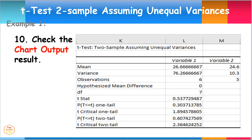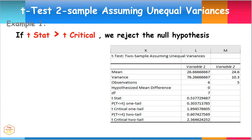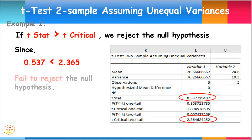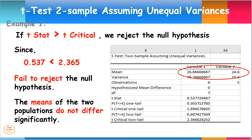Check the output results for the t-test: Two-Sample Assuming Unequal Variances. The output provides the mean and variances for both variables, as well as results for the t-value, t-critical, and p-value. The decision rule is: if t-stat is greater than t-critical, we reject the null hypothesis. Since 0.537 is less than 2.365, we do not reject the null hypothesis. This means the observed difference between the sample means — 26.67 and 24.6 — is not convincing enough to say that the average number of working hours between male and female workers differ. We conclude the means of the two populations do not differ significantly.